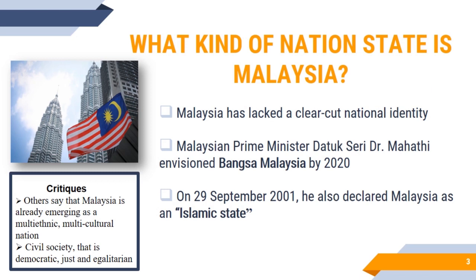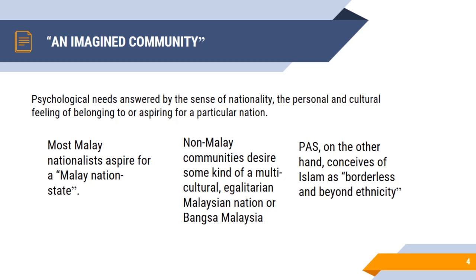Malaysia lacks a clear-cut national identity. However, Malaysian Prime Minister Dr. Mahathir envisioned Bangsa Malaysia — a vision where Malaysian people, both Malay and non-Malay, would come together in a modern, highly developed, egalitarian Malaysian nation. However, on September 29, 2001, he also declared Malaysia an Islamic state, which was contradictory to that vision. Critics say Malaysia is emerging as a multi-ethnic and multicultural nation but is far from being a democratic, just, and egalitarian civil society.